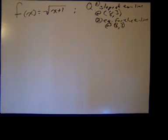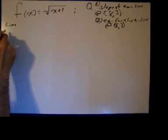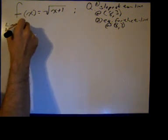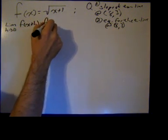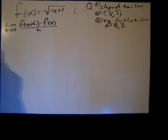In the next sections, we'll be finding slopes of tangent lines by rules. But at this point, to find the slope of the tangent line, you're going to use the limit definition of the derivative, which is the limit as h approaches 0 of [f(x+h) - f(x)]/h.